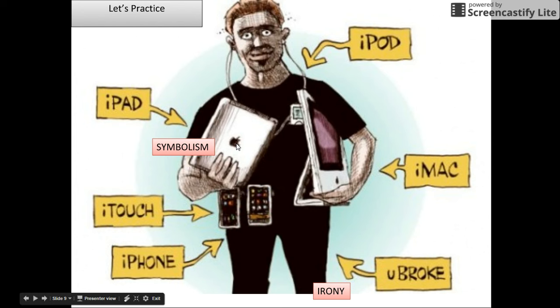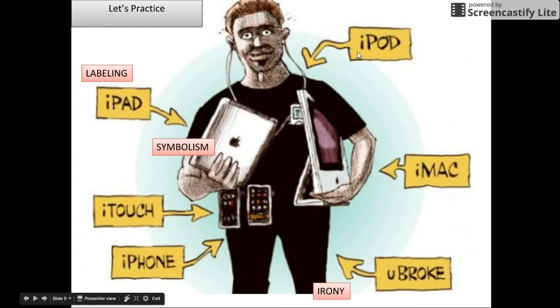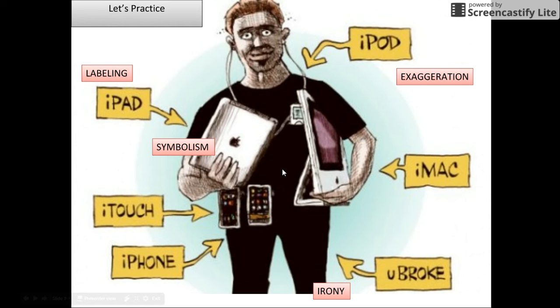An example of symbolism would be the Apple logo — Apple products are something very familiar in our culture and background. Then, an example of labeling are the arrows pointed around the person holding an iPad, an iTouch, and an iPhone — the author wanted to be extremely clear. Then an example of exaggeration is this entire person. Do you really think someone is going to walk around with all of these devices at once? Probably not — so he's exaggerating that idea.